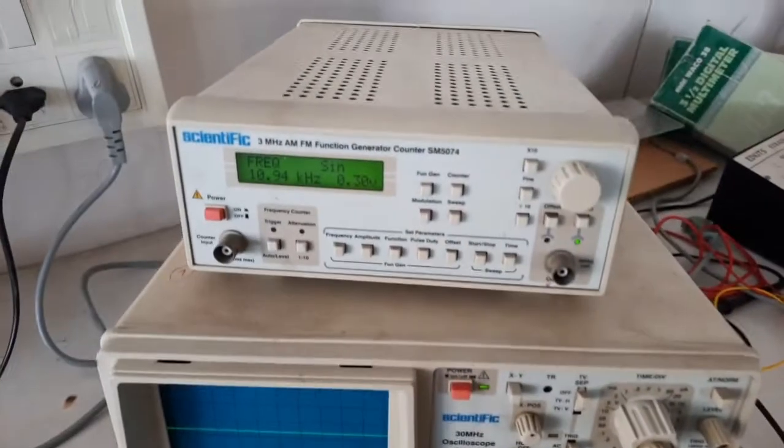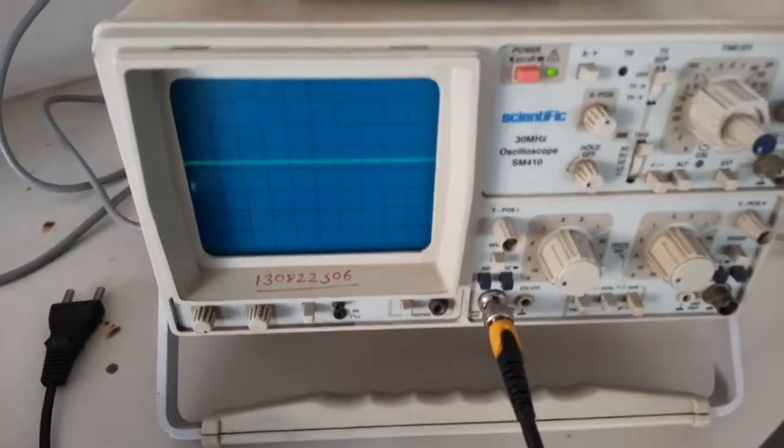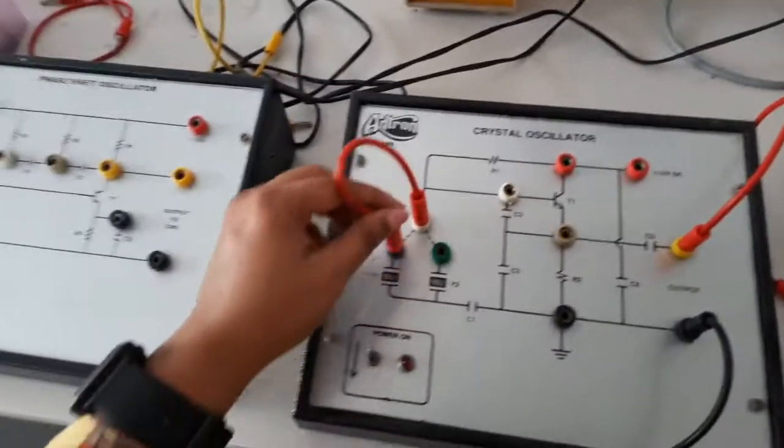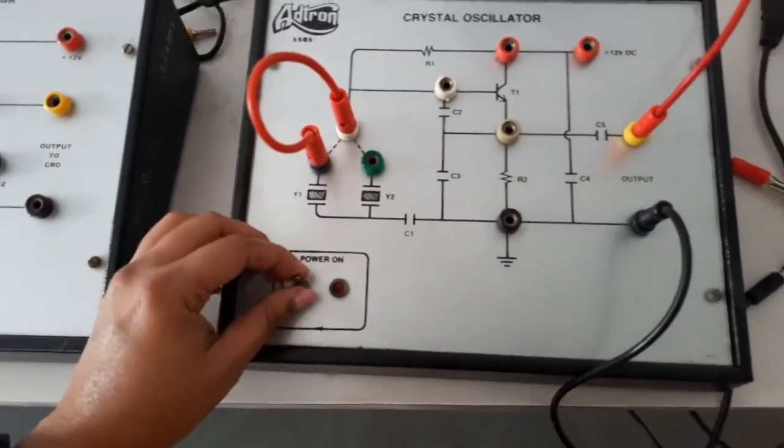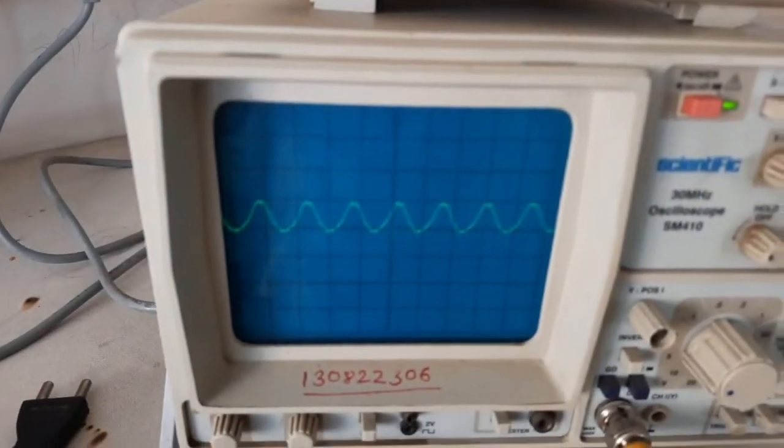This is the function generator which is not connected, so we are not giving input to the crystal oscillator. This is the CRO where we will see the output. There is no input given to the crystal oscillator.